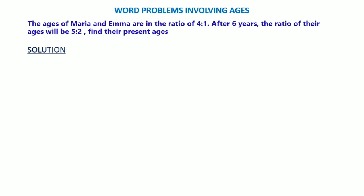I will first put their ages in the ratio. I'll say Emma and Maria. The ratio is 4 to 1, so Maria is 4 and Emma is 1.